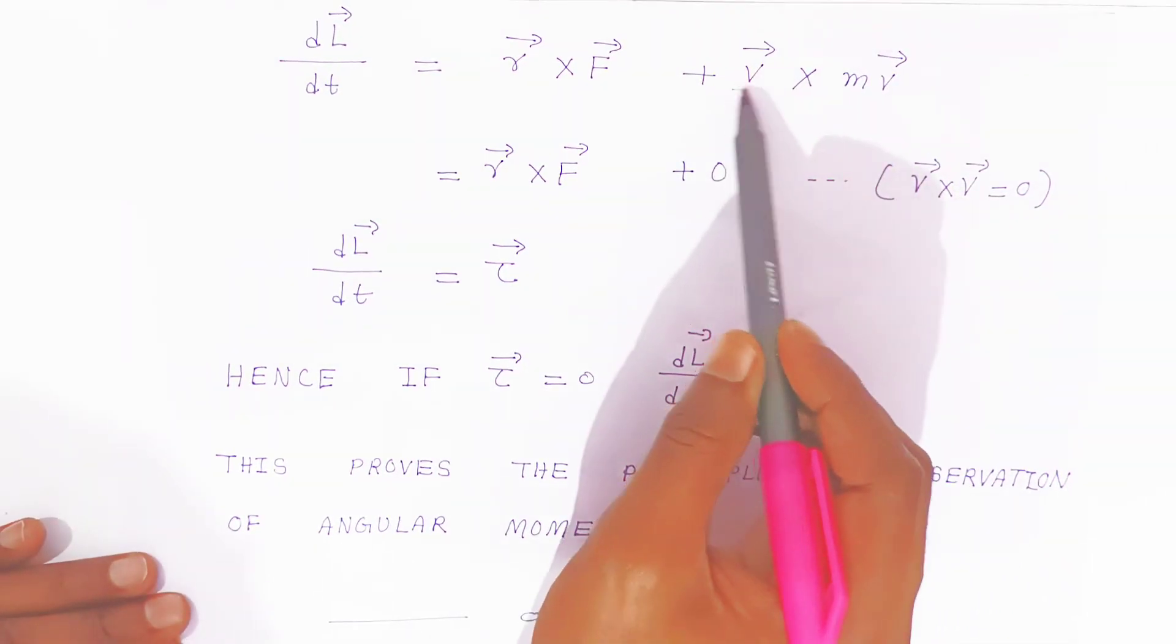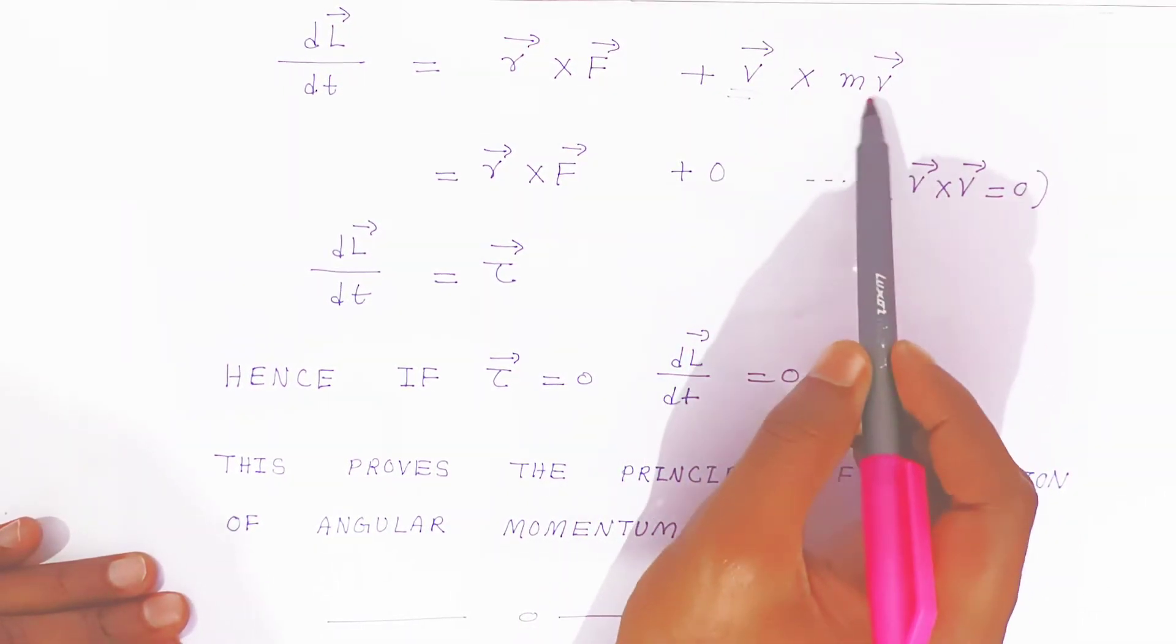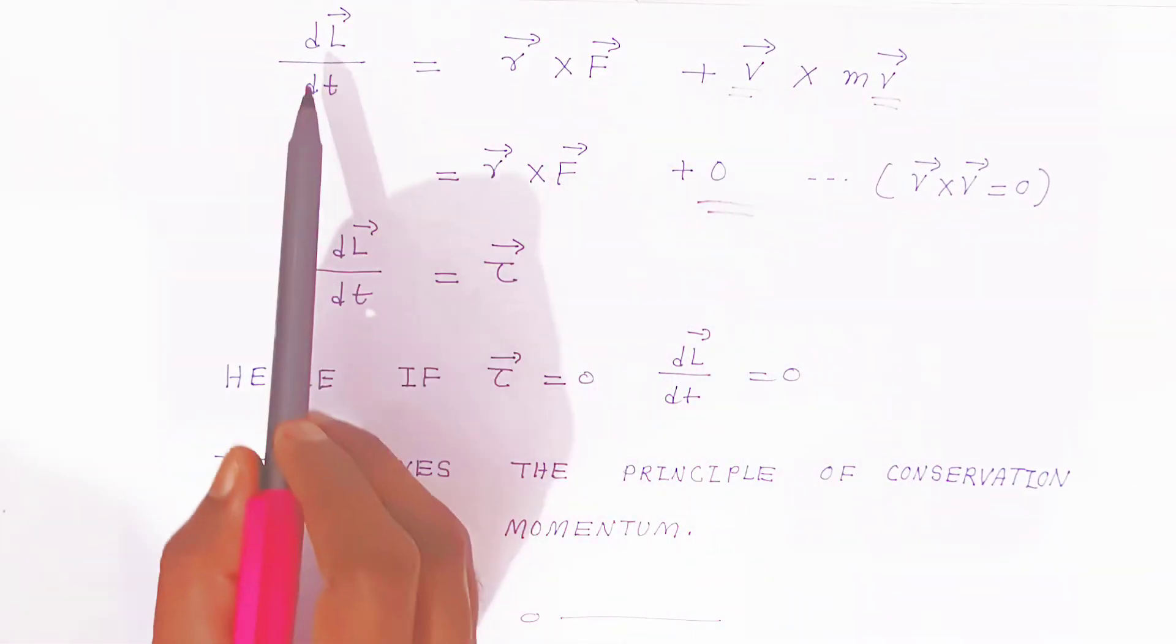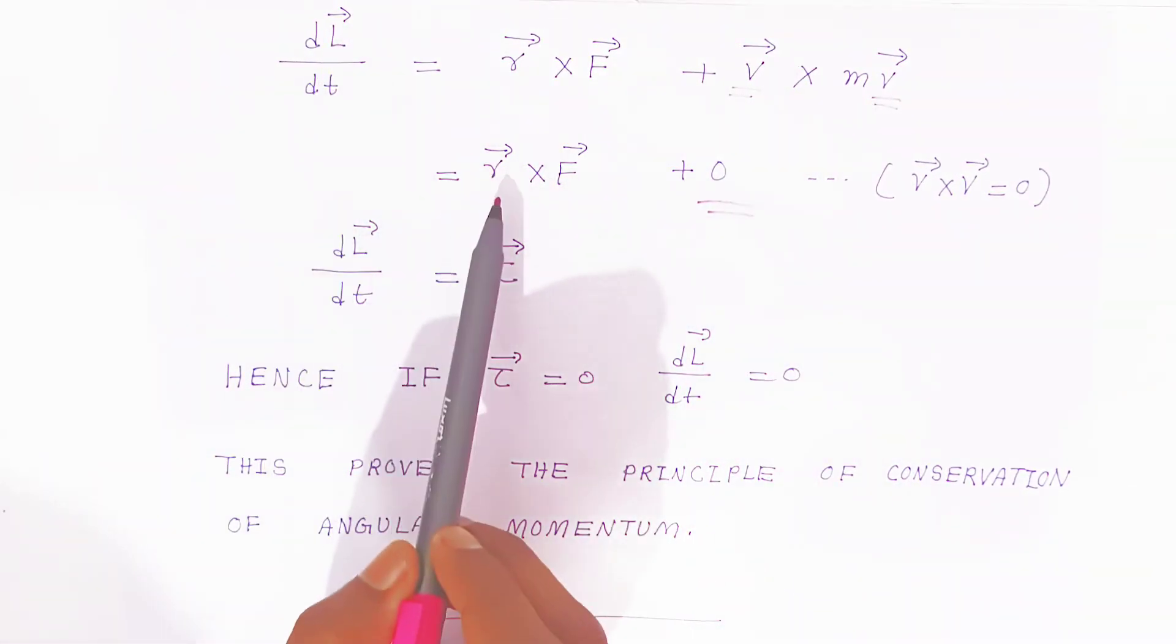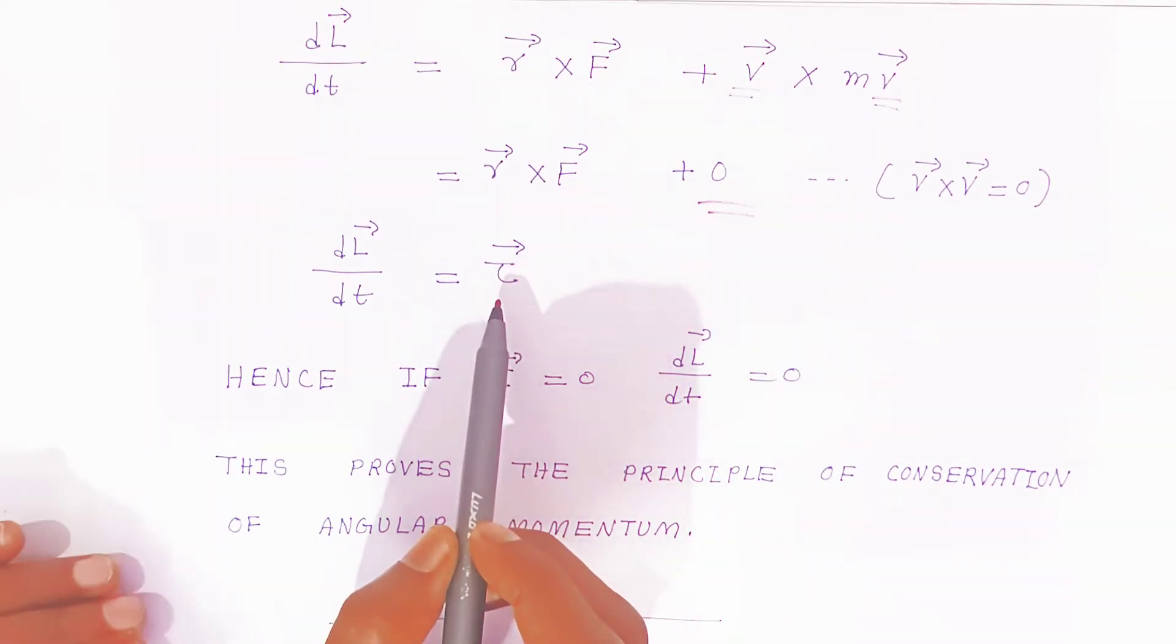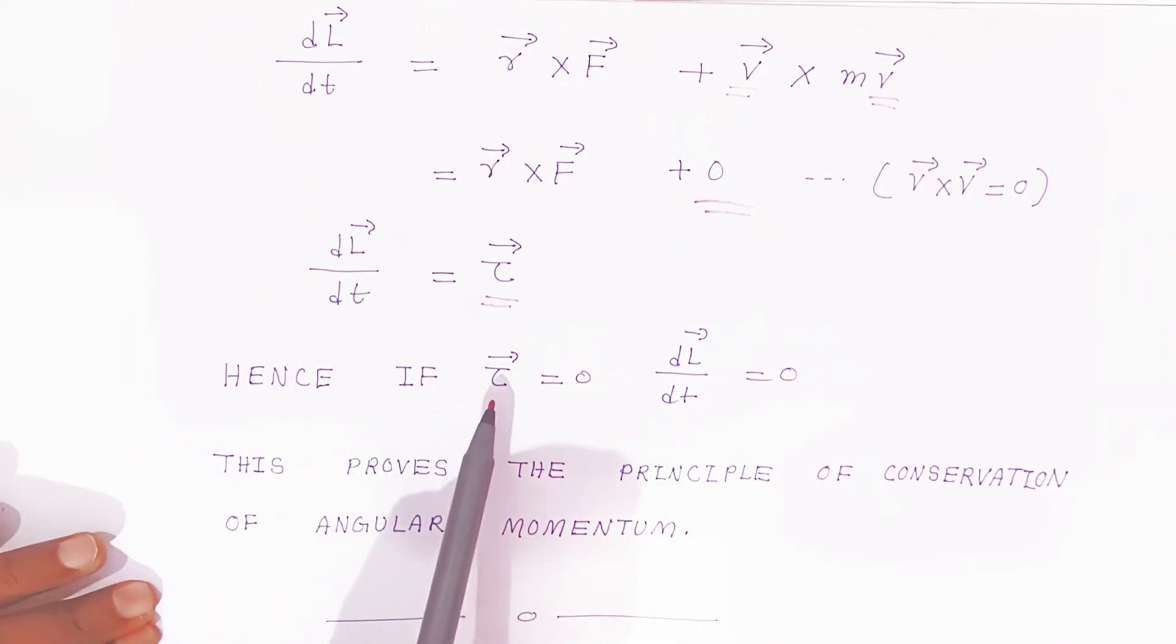When you find out v bar cross v bar, that equals zero, so the whole term becomes zero. You are getting dL bar upon dt is nothing but r bar cross F bar, which is nothing but torque. Hence if torque is zero, dL bar upon dt is also equals to zero.